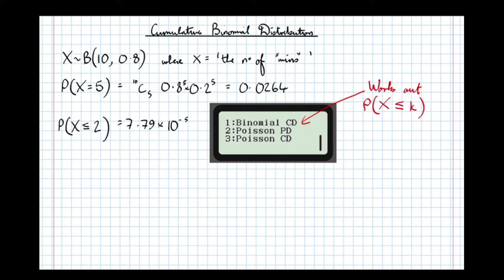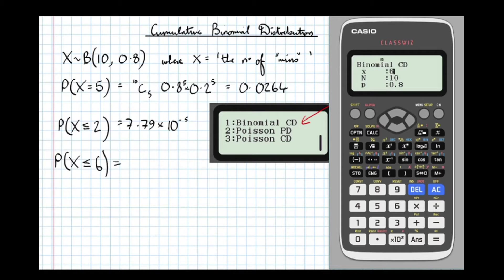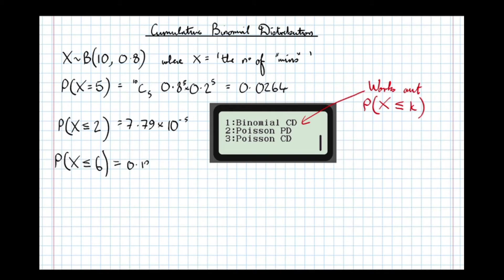Let's do another. Let's find the probability that X is less than or equal to 6. So if we go back to the binomial cumulative distribution, simply put 6 in there. The probability that X is less than or equal to 6, where there are 10 trials and probability of winning is 0.8, gives us an answer of 0.121.